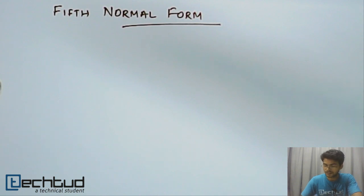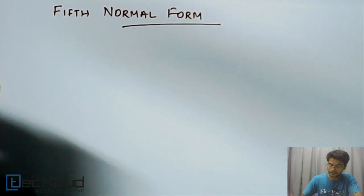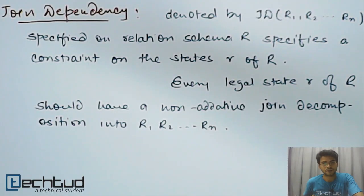Before we study 5th normal form, we have to understand join dependency. Here is the formal definition of join dependency, denoted by JD up to Rn, specified on relation schema R. It specifies a constraint on the states of R. Every legal state R of relation R should have a non-additive join decomposition into R1, R2, and Rn. Let's understand it with an example.